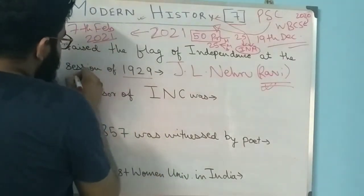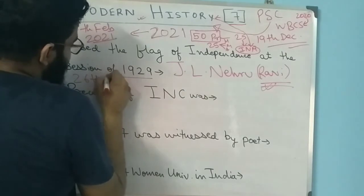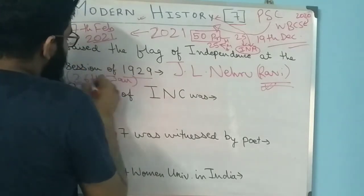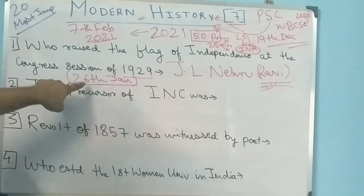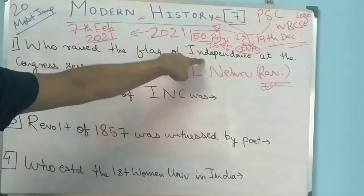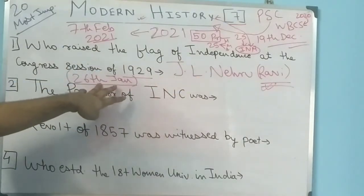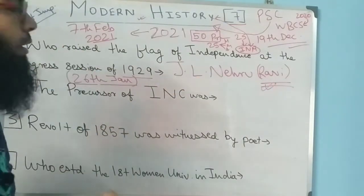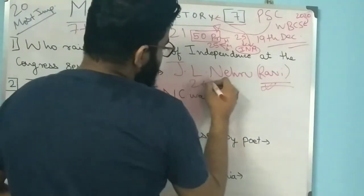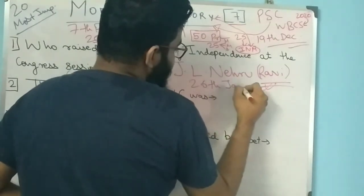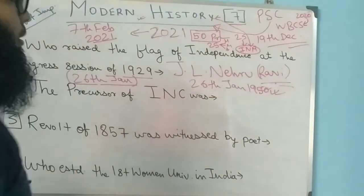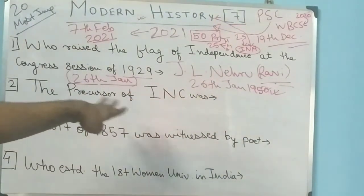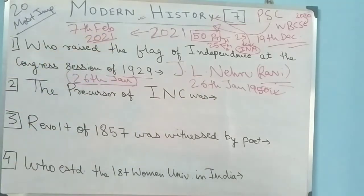The date 26th January is very important because a major event was made on this date. This was the first day of independence and the flag of independence was raised. The 26th January 1950 is when the Constitution came into effect. So the 26th January was important - it was proposed as Republic Day.